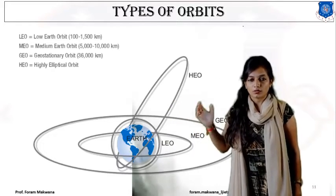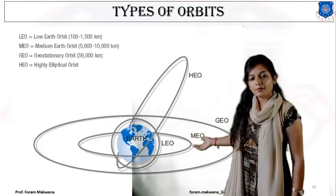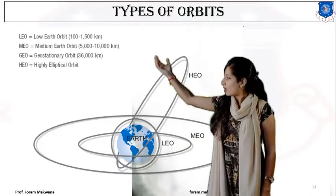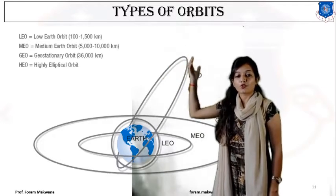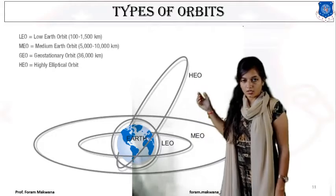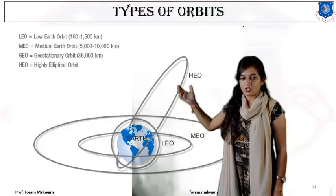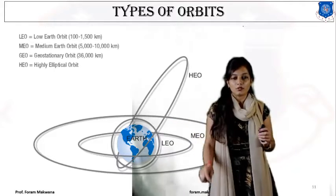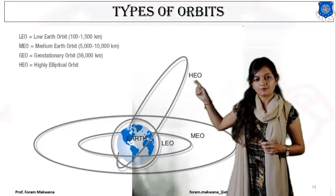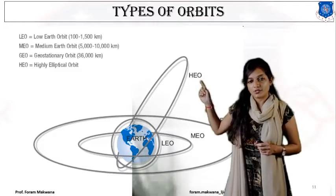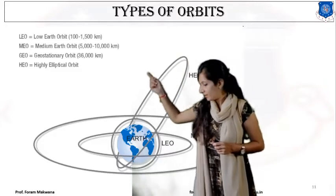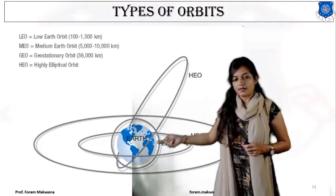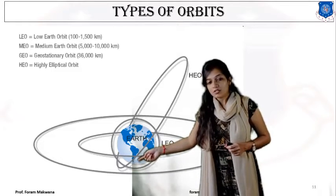The second is Medium Earth Orbit, which has a medium distance of 5,000 to 10,000 km from the surface of the Earth. GEO, geostationary orbit, has the highest distance of approximately 36,000 km and lies on the equator of the Earth. The last one is HEO — Highly Elliptical Orbit. As its name suggests, the shape of that orbit is elliptical, creating two points: one farthest from the surface of the Earth and one nearest.